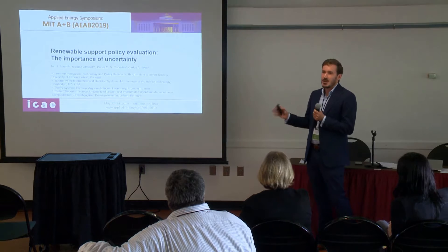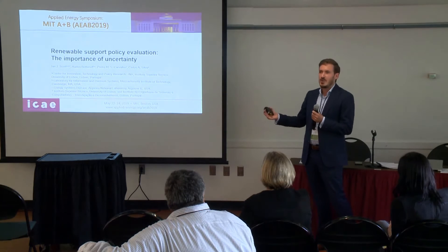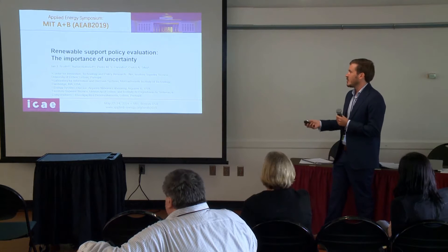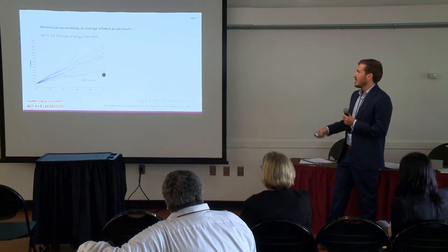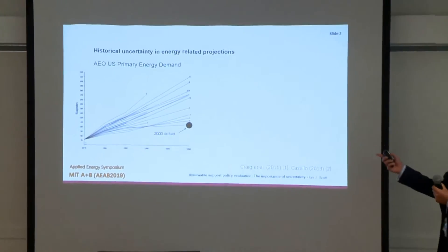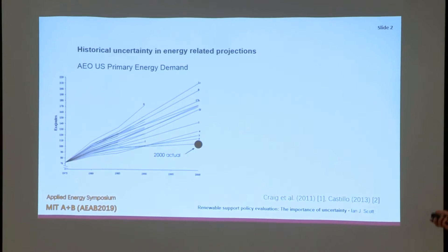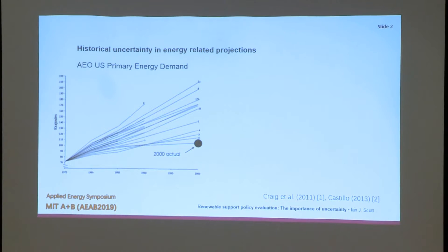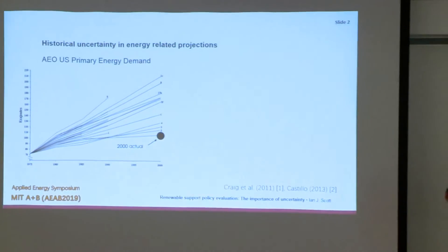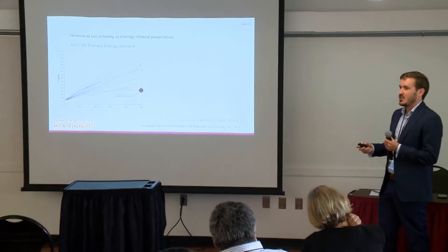It's uncontroversial to say that in the long term, when we're making investment decisions, there's a lot of uncertainty about what's going to happen. This is projections from the 70s of what primary energy demand would be in the US. There's a huge range of what people thought would happen, and what actually happened in the year 2000 was on the extreme low range of those projections. Imagine if you made an investment decision expecting energy demand to be twice what it is — you're going to be in trouble.